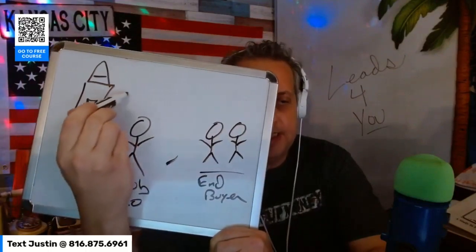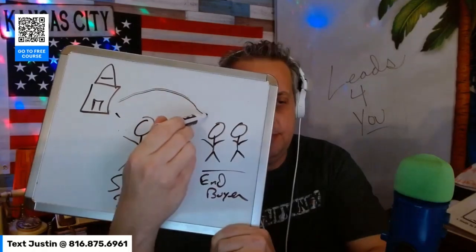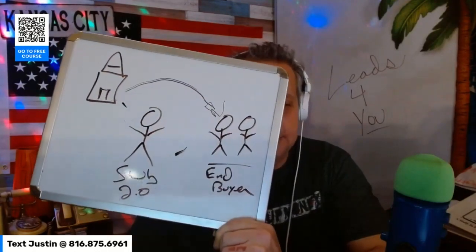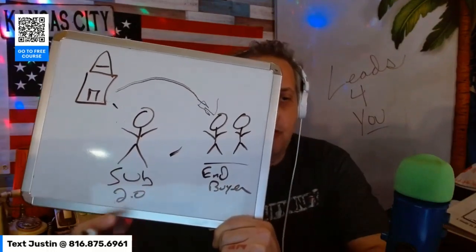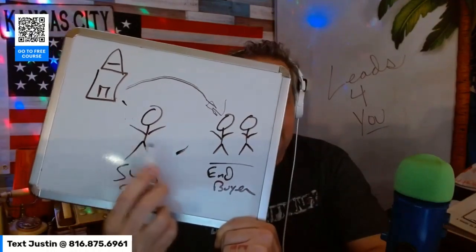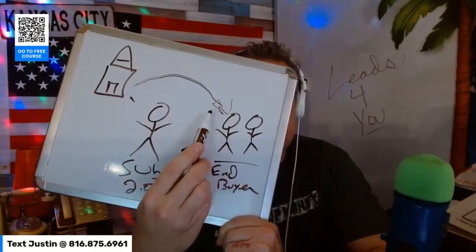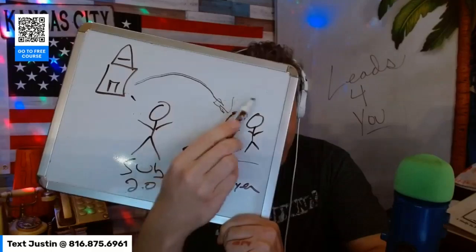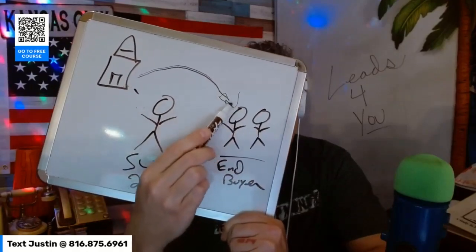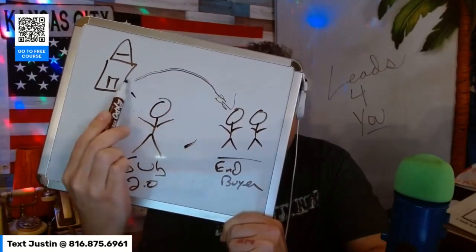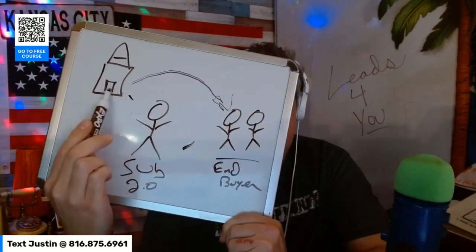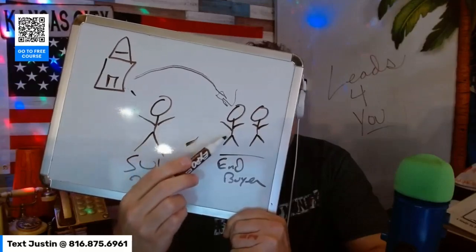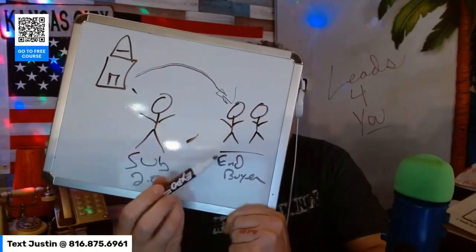The deed is going to transfer, because it's subject to, from the homeowner to the end buyers. The performance mortgage is going to be added on to the deed. They're still going to be paying the original mortgage as well — the homeowner's original mortgage. So the end buyer is going to be paying the homeowner's mortgage for them, because it's subject to. But now they're also going to see on the deed a performance mortgage placed for $1.